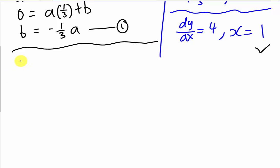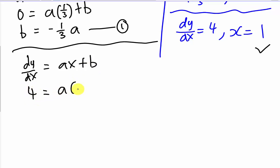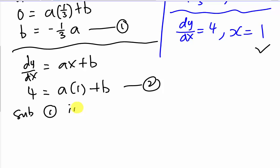My dy/dx equals 4 when x equals 1. Since dy/dx equals ax plus b, substituting dy/dx equals 4 and x equals 1 gives: 4 equals a(1) plus b, which is 4 equals a plus b. This is my second equation.